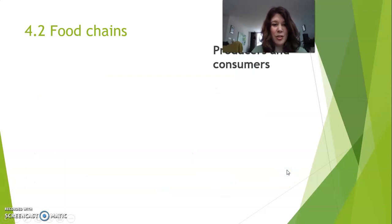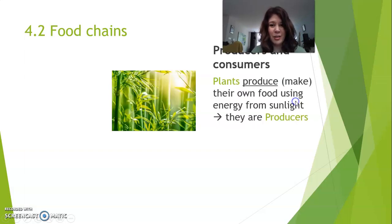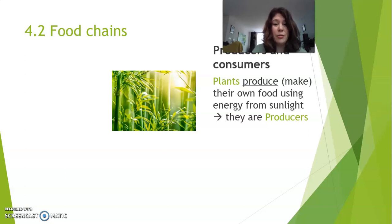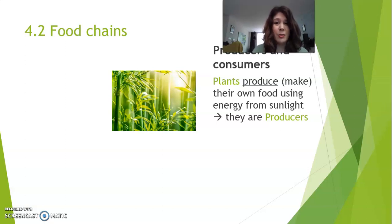So, let's talk about producers and consumers. Plants are what we call producers. Why? Because they produce — meaning they make — their own food using energy from the sun. They don't really eat sunlight, but they use the energy from the sun to make food. That is why they are called producers, and plants are the only ones that can do this.